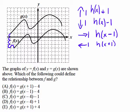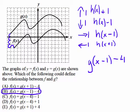I want to move G down to F. That means I need to go 4 down and 1 to the right. So that's going to be G, 1 to the right is X - 1, and 4 down is minus 4. So G(X - 1) - 4 is going to be F(X), and that's this choice here.